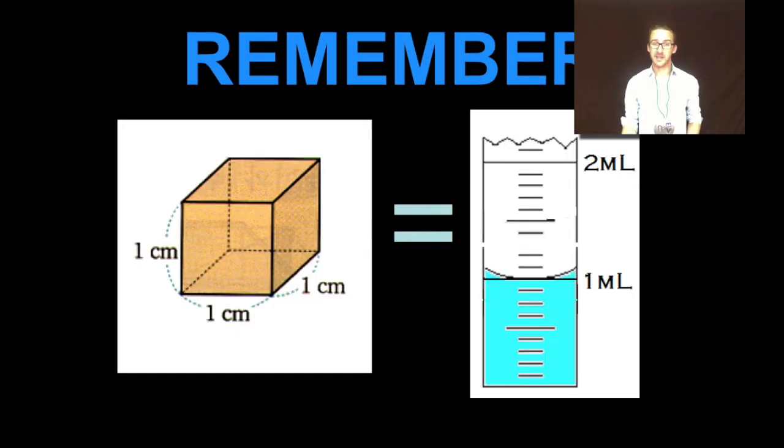Now, recognize that those are equivalent quantities. Cubic centimeters and milliliters are the same volume. In other words, if I had a one by one by one cube, filled it completely with water, and dumped it into a graduated cylinder, I would get one milliliter of volume.